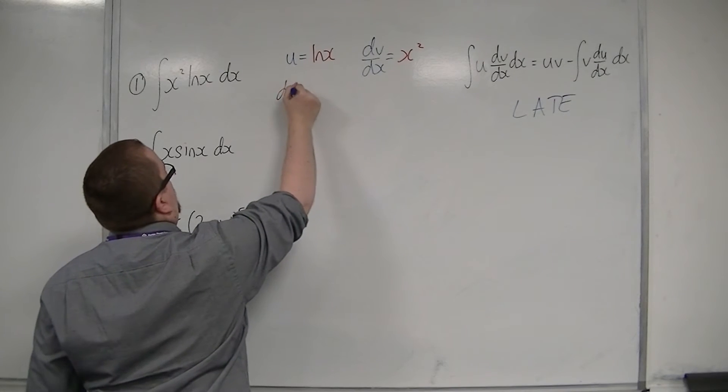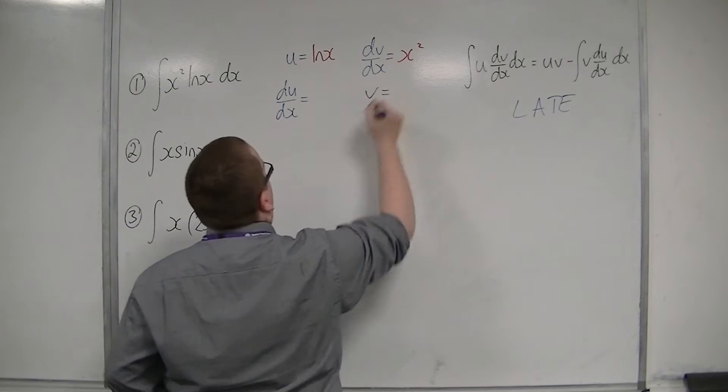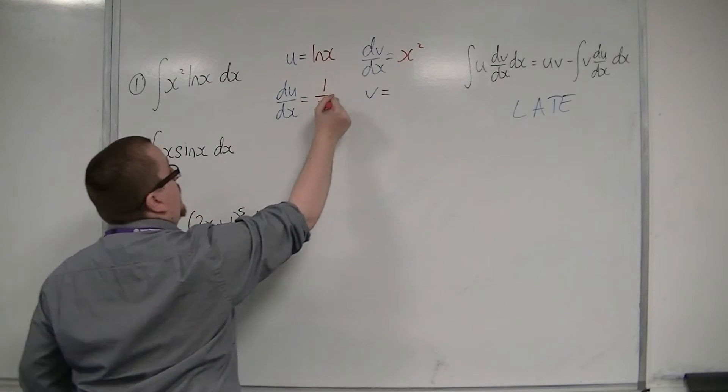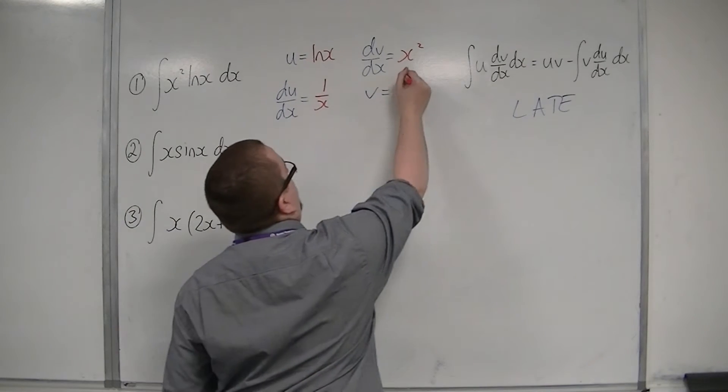So I need a du by dx and a v. So log x differentiates to 1 over x, and x squared integrates to 1 third x cubed.